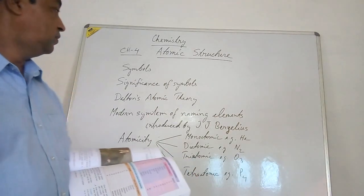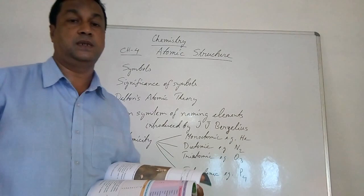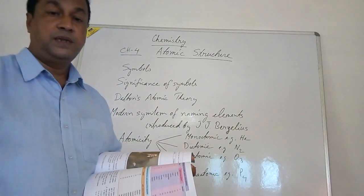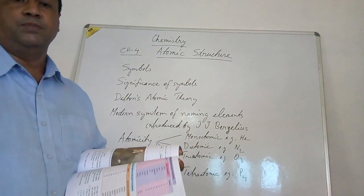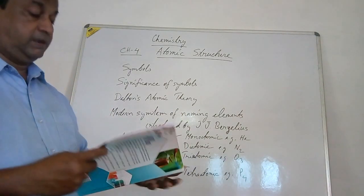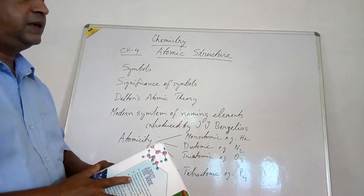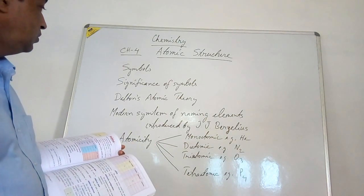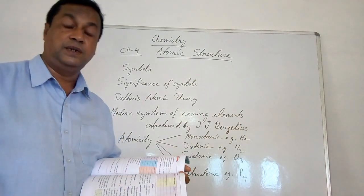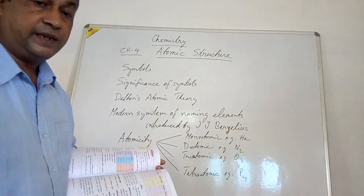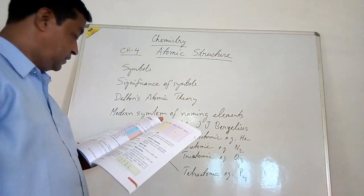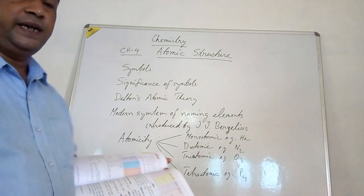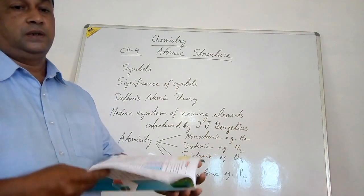Now let's see the significance of symbols — what does a symbol mean or represent? First, it gives the name of the element. Second, it represents one atom of the element. Third, it saves time when writing the name of an element. And fourth, it is convenient to write element names using symbols.